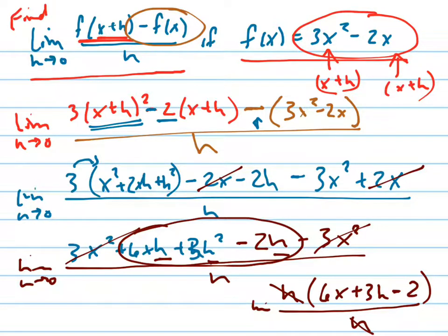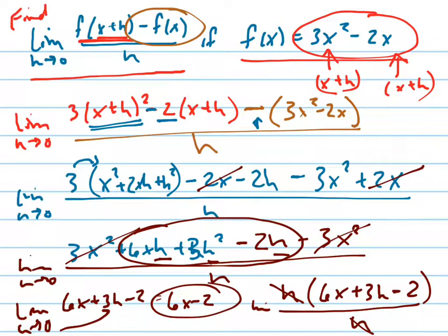Remember, there's a limit. So this is the limit as h goes to zero of 6x + 3h - 2. And now I can plug in zero, and that gives me 6x - 2. That's my answer. Thank you.